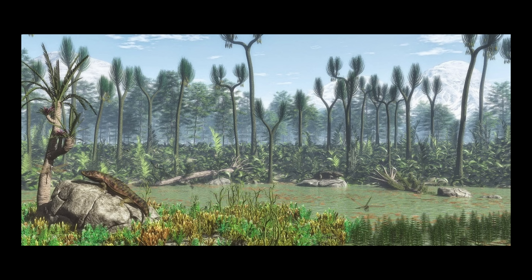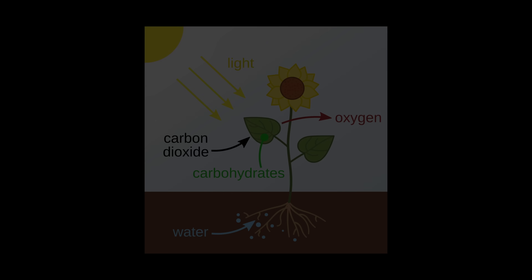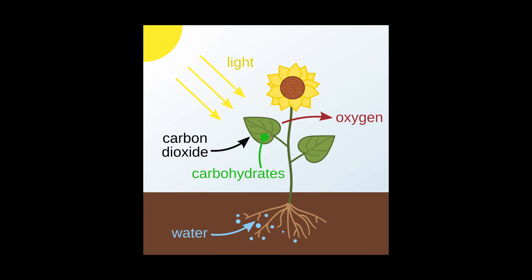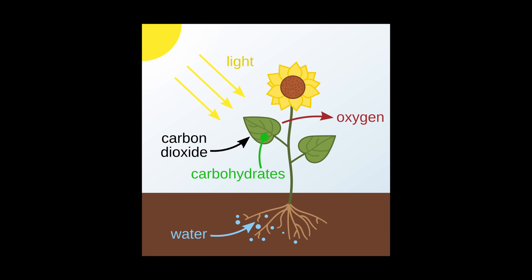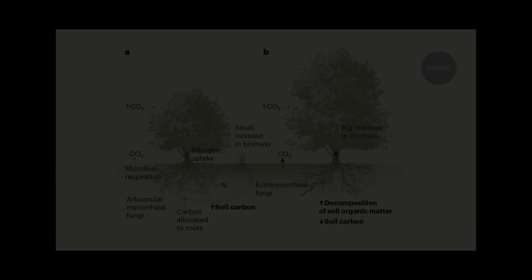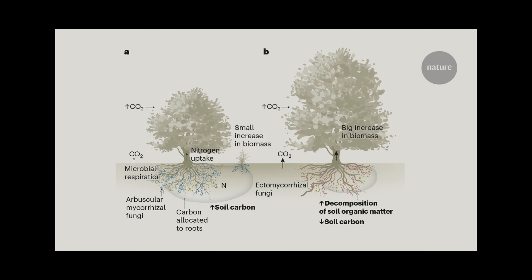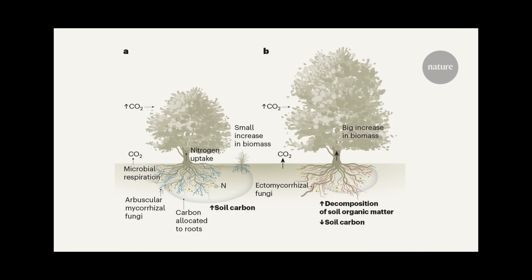Here is where it gets weird. Plants, as you know, pull carbon dioxide out of the air and release oxygen. Photosynthesis. Standard stuff. But normally when plants die, the decomposers break them down — bacteria, fungi — and that process releases the carbon right back. It's a cycle: in, out, balanced.